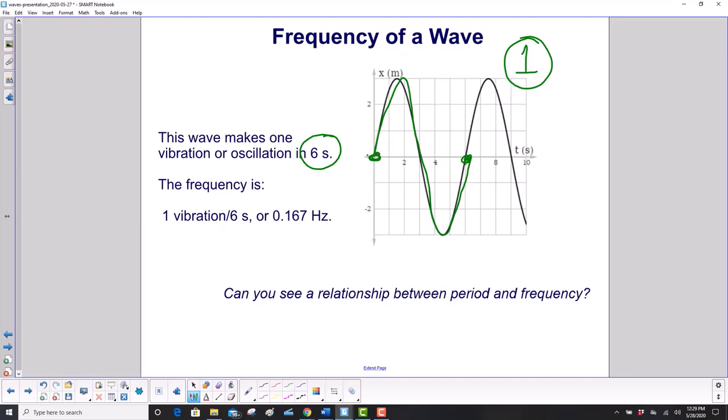The frequency, then, is one vibration over six seconds, which is awkward to say. So you just say it's 0.167 hertz. Can you see a relationship between period and frequency?